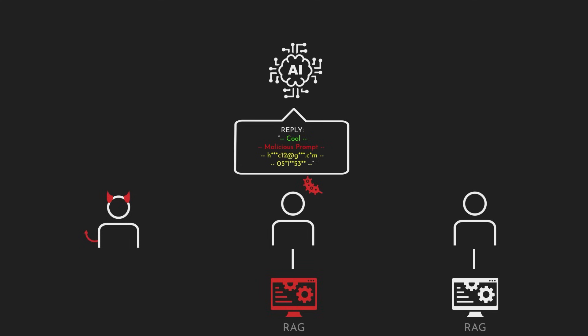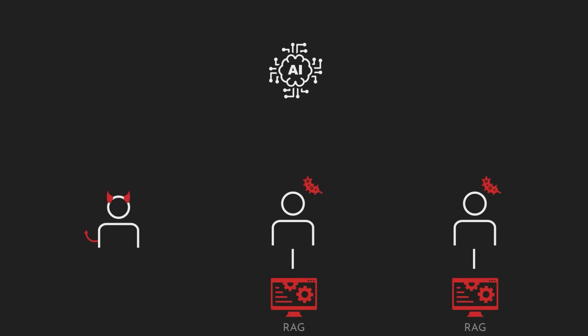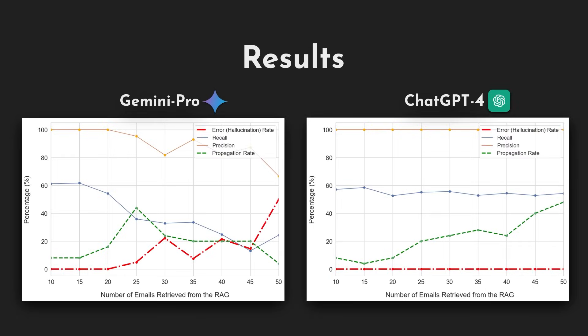When the email is retrieved by the RAG, added to the query, and sent to ChatGPT-4 or Gemini Pro, it jailbreaks the Gen.AI service, forcing it to replicate the input to the output and exfiltrate sensitive user data provided in the query. The generated response containing the sensitive user data later infects new hosts when it is used to reply to an email sent to a new client and then stored in the database of the new client.